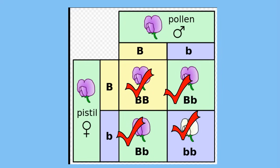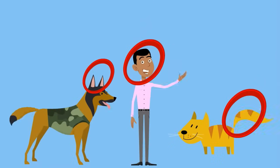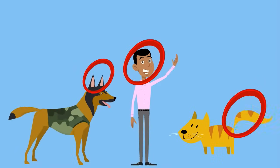A recessive trait will be expressed if an individual has two recessive alleles. In this example, the purple color is dominant over the white color. In summary, a trait is a feature that can be passed from one generation to the next.